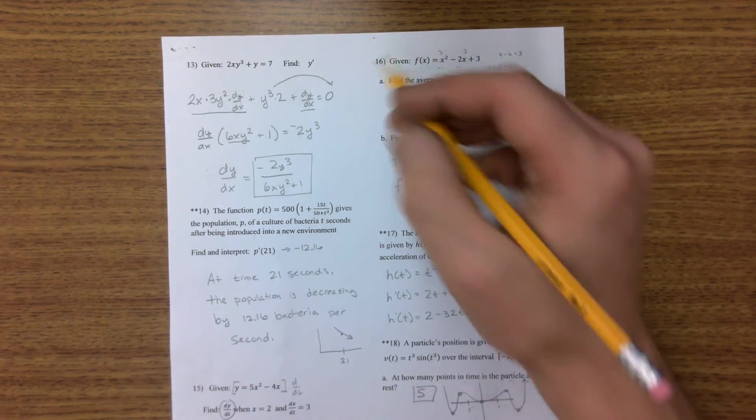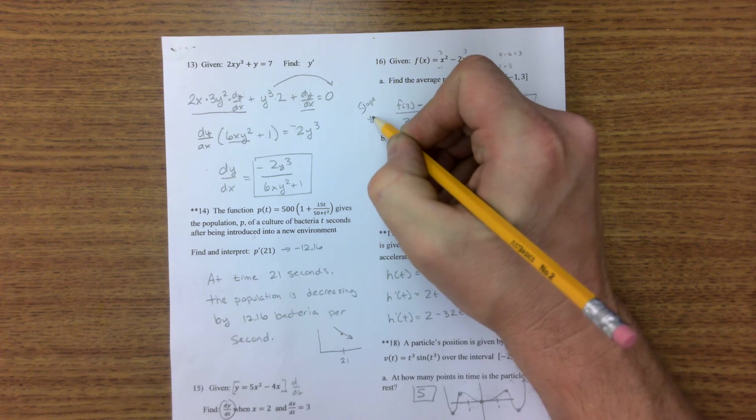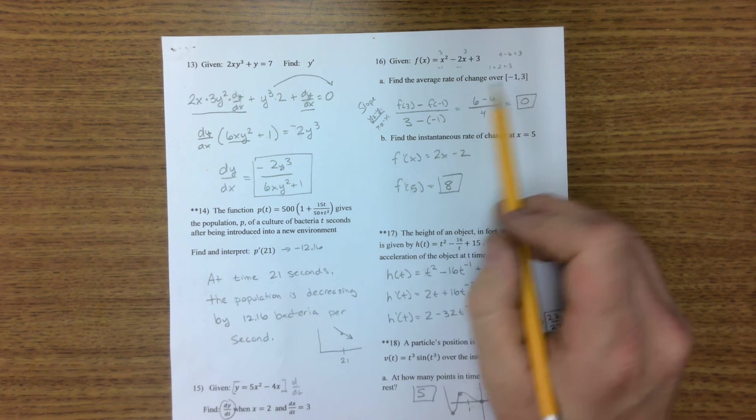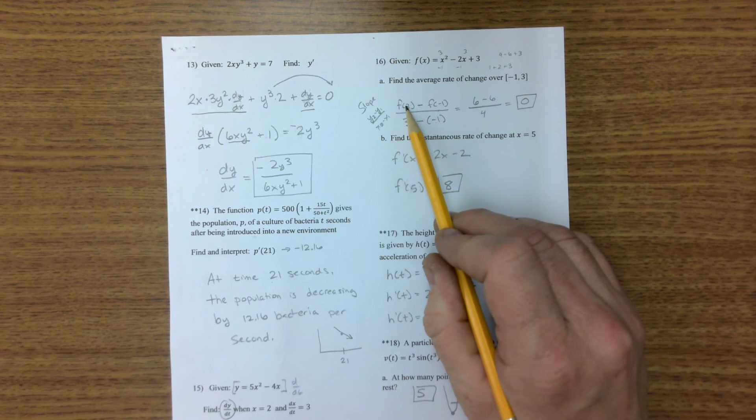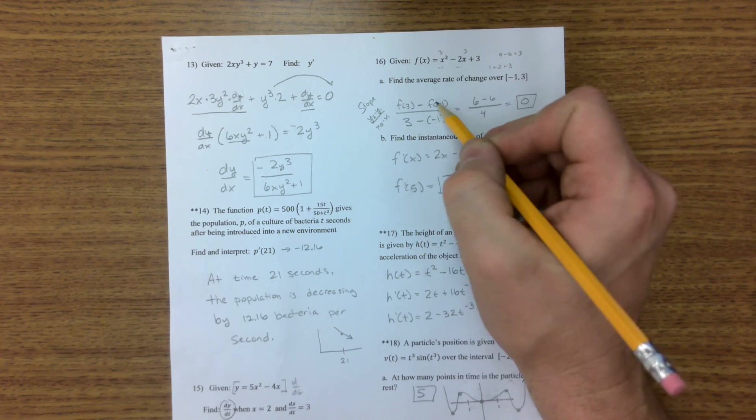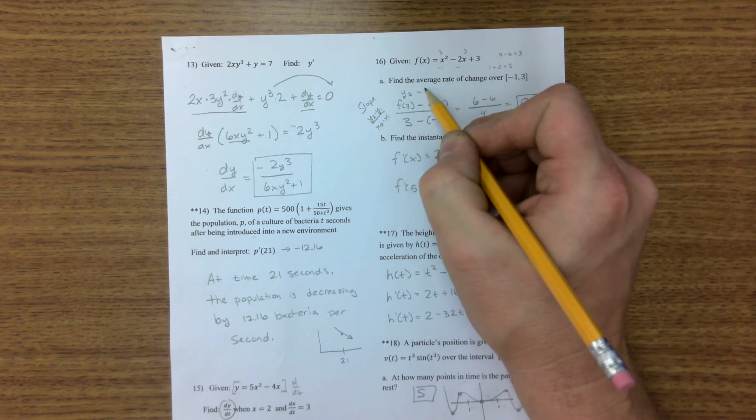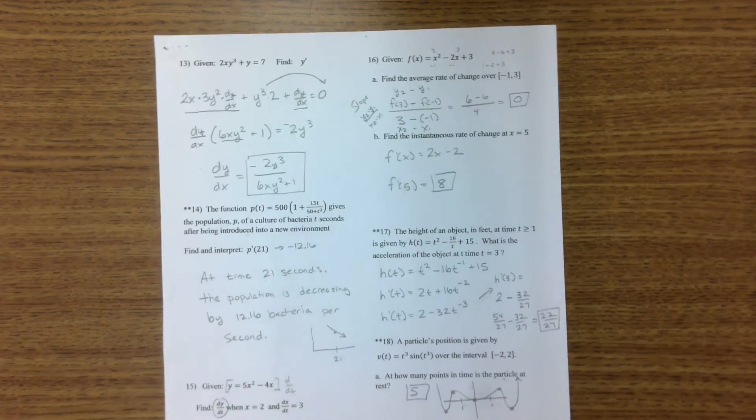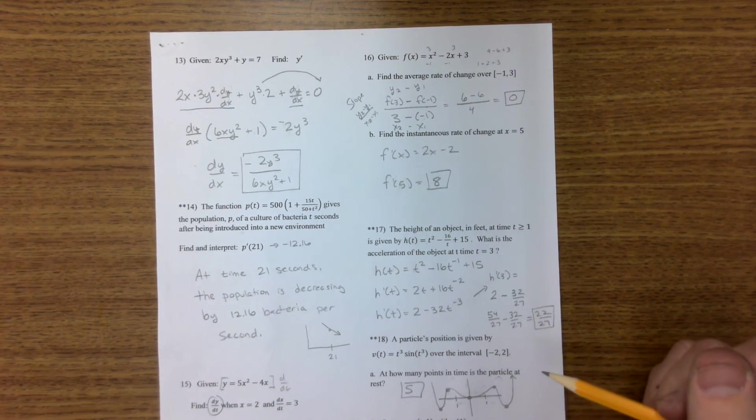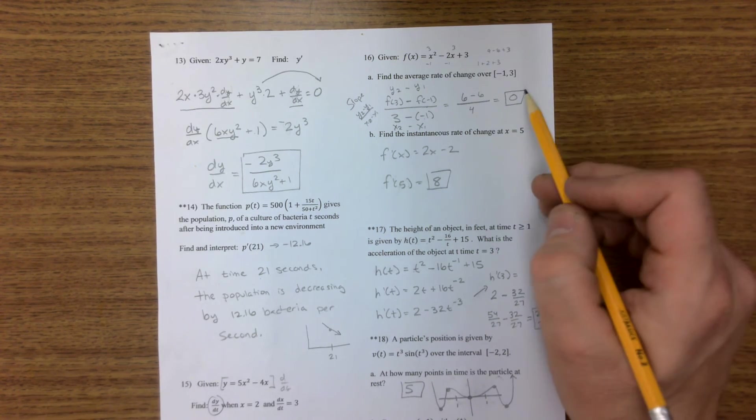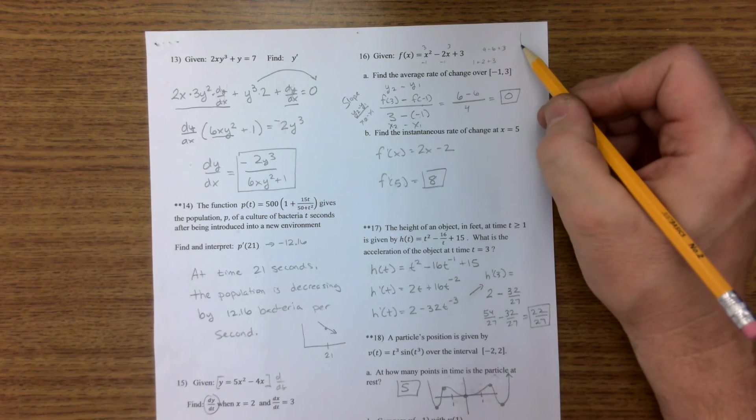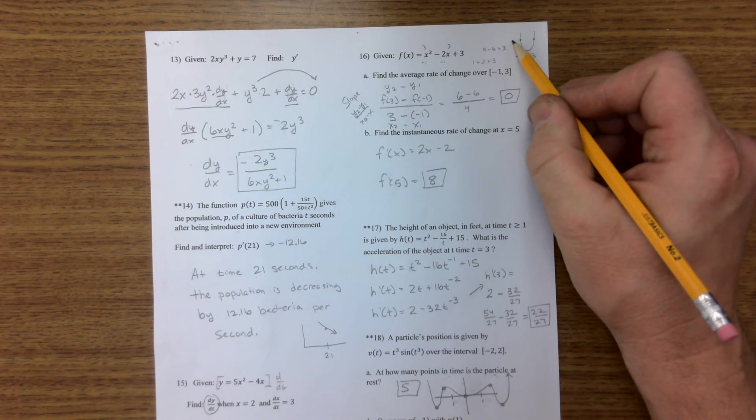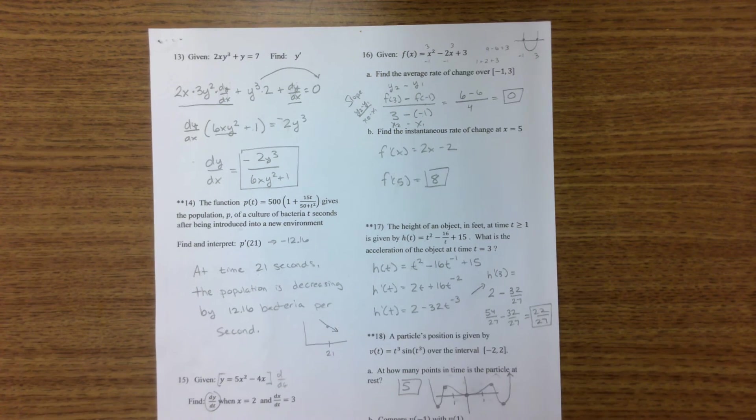Average rate of change is nothing but slope from your Algebra 1 class many years ago. It is 3 minus negative 1 over f of 3 minus f, it's y2 minus y1, x2 minus x1. It's the same exact thing that you were doing in your Algebra 1 class. Nothing different. The slope is 0. What does that mean? Well, that means from this point to this point, negative 1 to 3 on this graph, there's no change.